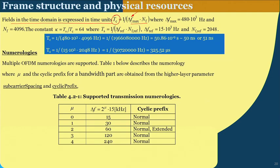If we look at the entire denominator term — delta_f_max multiplied by N_f — together this gives a bandwidth indication, and 1 over that bandwidth is the chip duration or clock duration. Delta_f_max is specified as 480 × 10^3 Hz, i.e., 480 kilohertz. Relating it in terms of mu, delta_f equals 2^mu × 15 × 10^3 Hz. This factor goes into delta_f_mu by a factor of nearly 32, meaning mu takes a value of 5 in this case.